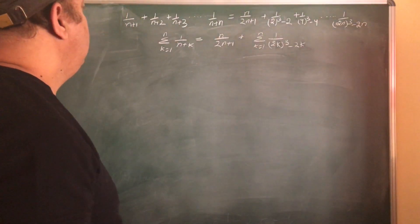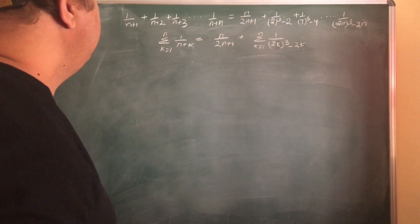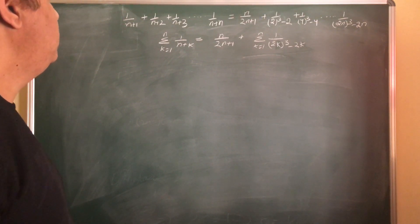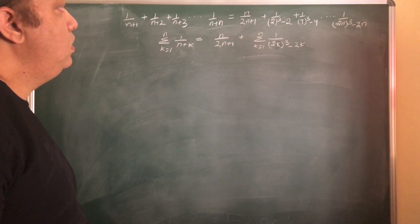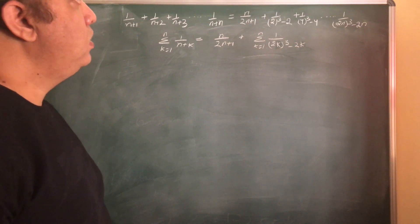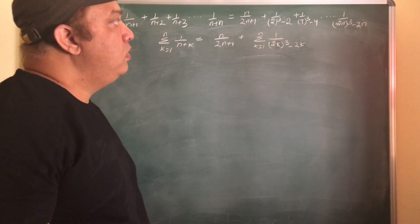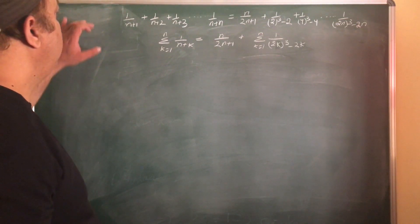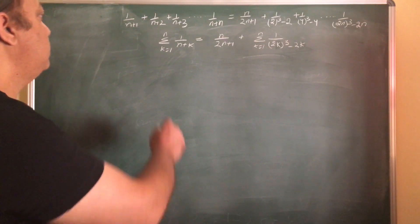Hi friends, today I am going to talk about the first identity that appears in the second chapter of the first book of Ramanujan. The identity states that 1 upon n+1 plus 1 upon n+2 until 1 upon n+n is equal to n upon 2n+1 plus 1 upon 2n-2 plus 1 upon 4n-4 until 1 upon 2nq minus 2n. This identity can be written concisely using summation notation.